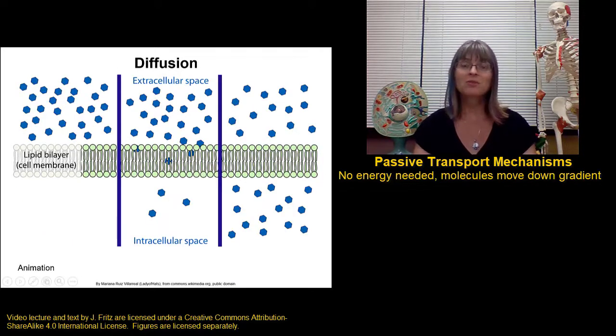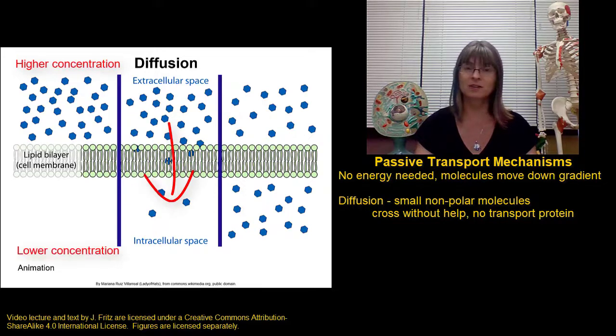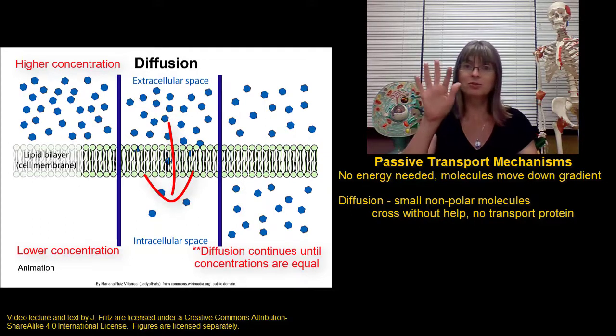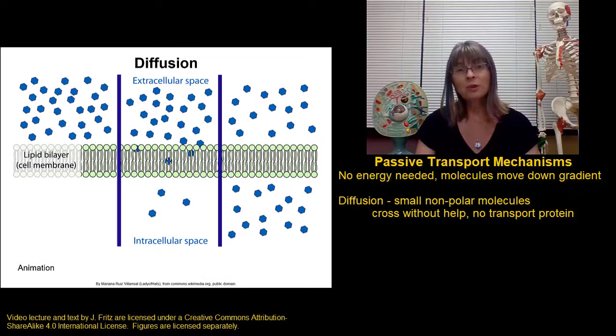The simplest form of passive transport is simple diffusion. In simple diffusion, molecules simply move across the plasma membrane on their own from areas of high concentration to areas of lower concentration. This doesn't require any energy and it doesn't require any transport proteins. The molecules just wiggle across the membrane and go to the areas of lower concentration. Because there's no transport protein to help,